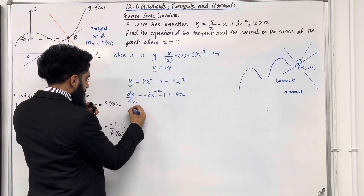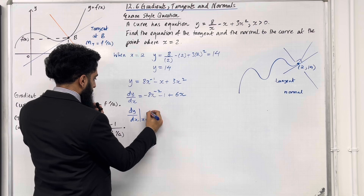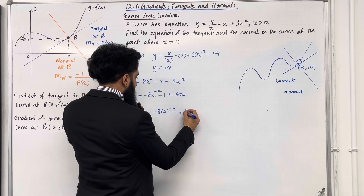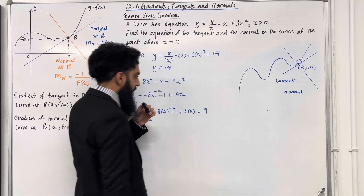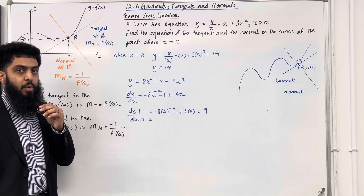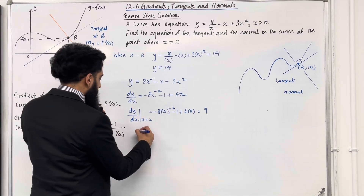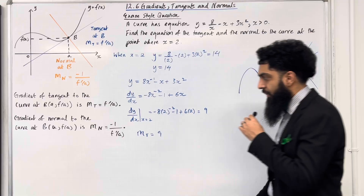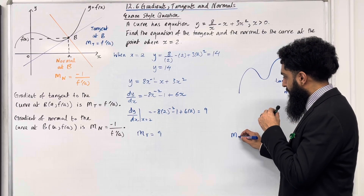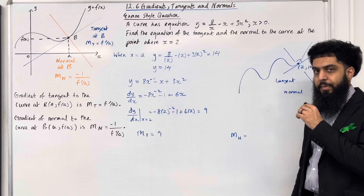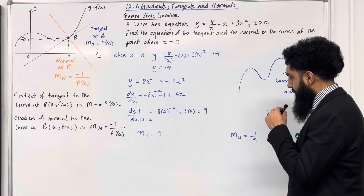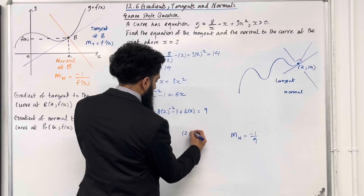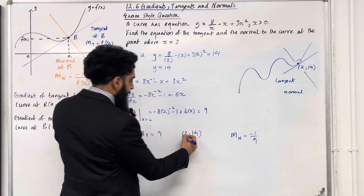Now we substitute x equal 2 into the gradient function: minus 8 lots of 2 to the power minus 2, minus 1 plus 6 lots of 2. This gives me 9. So the gradient of the tangent to the curve where x is equal to 2 is 9, and we write m subscript t equals 9. By definition, the gradient of the normal, m subscript n, is the negative reciprocal of 9, which is minus 1 over 9. The tangent and normal both pass through the point (2, 14), which we label as x₁, y₁.